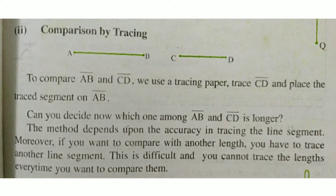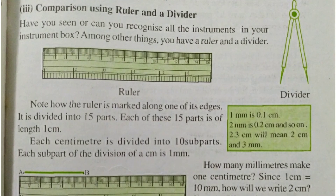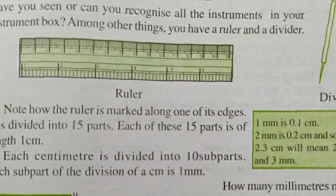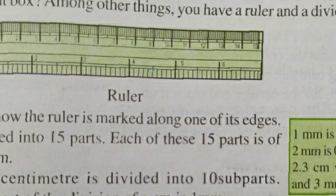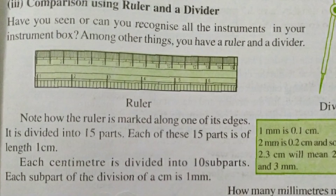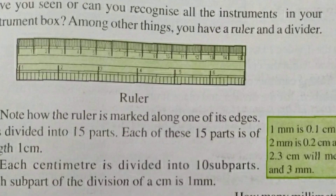Third one is comparing using a ruler and divider. You know that the ruler in your instrument box — the upper one is divided into 15 centimeters, and the lower one is in inches. So we will measure in centimeters. The upper one is in centimeters, and each centimeter is divided into 10 parts, known as millimeters. One millimeter equals 0.1 centimeter; 2 mm equals 0.2 centimeter, and so on. So 2.3 centimeters means 2 centimeters and 3 millimeters. By this method, by the scale, we can measure.